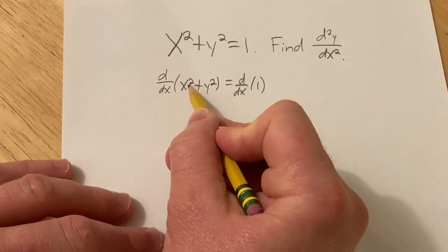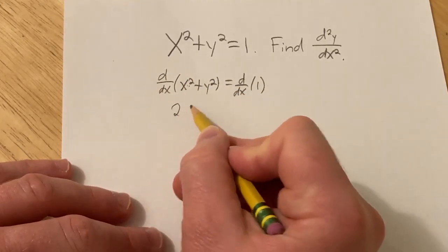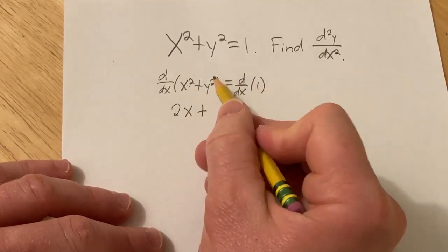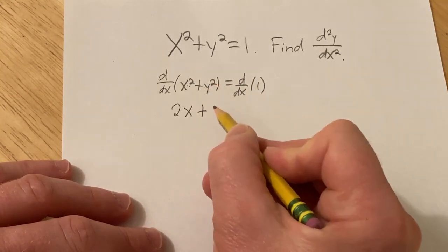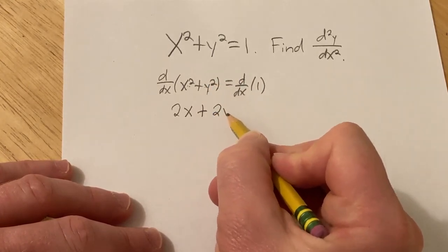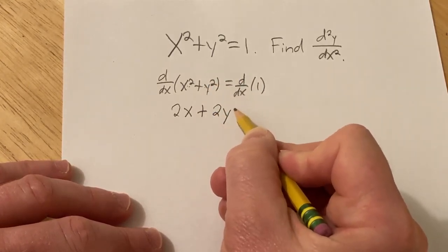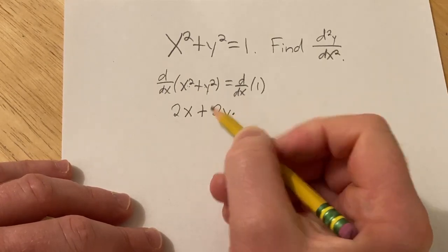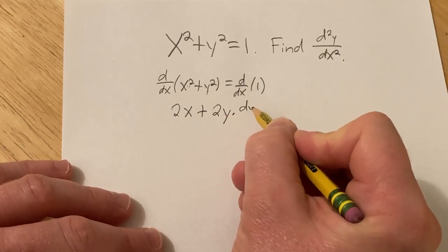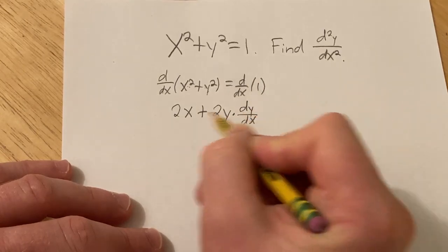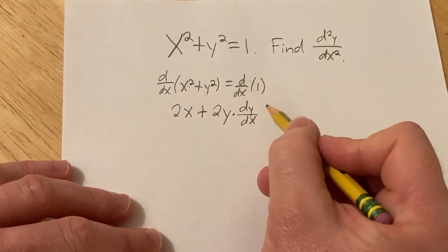So taking the derivative here, we're going to get 2x plus, and then here, you want to think of y as a function of x. So you bring down the 2, you leave the inside untouched. There's a 1 here, but I won't write it. And then times the derivative of the inside. Well, the inside function is y, and so its derivative is dy/dx. That's the chain rule. And the derivative of 1 is 0.